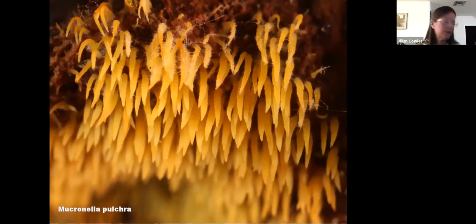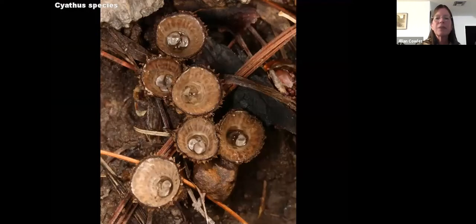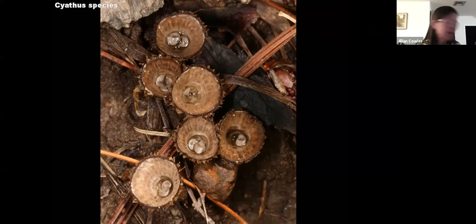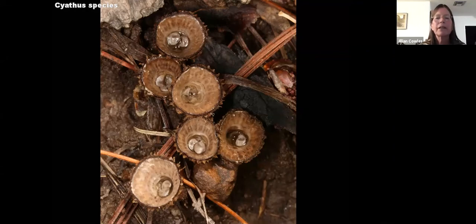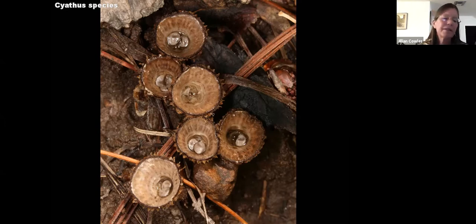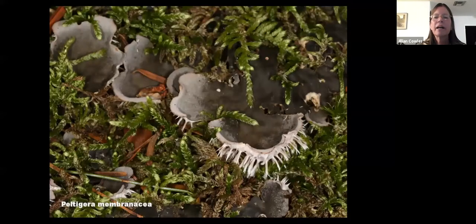Bird's nest fungi are neat because they have specialized structures. The nest is called a peridia and the little eggs are called peridioles, which hold the spores. What happens is that a drop of rainwater hits the nest and splashes the little eggs out — it's still passive dispersal. Now we're going to get into Ascomycetes from high elevation.